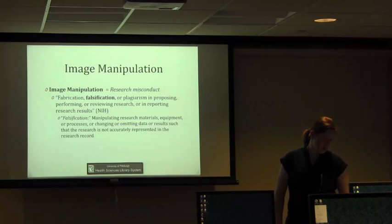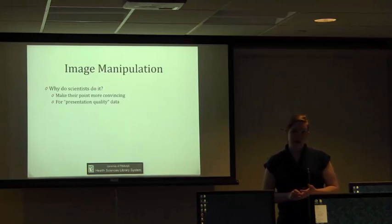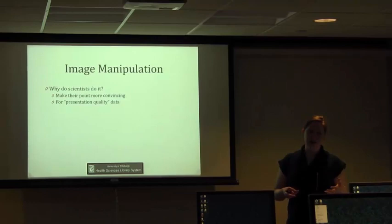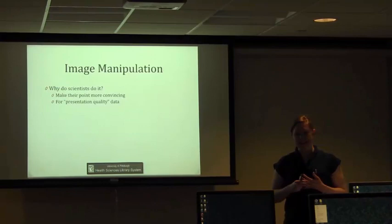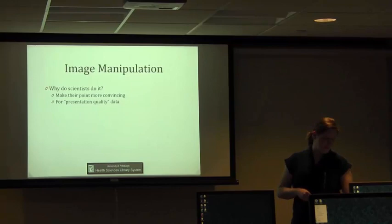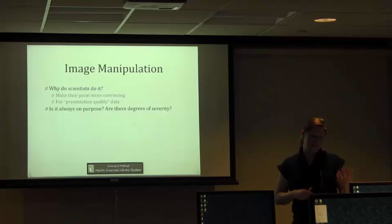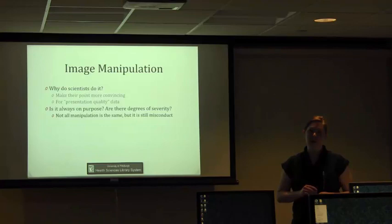Why do scientists manipulate images? Two main reasons are to make their point more convincing. A lot of people say things like, well I knew that was the result but it wasn't quite clear in my data and the scientific assumption of knowing what the results are despite what the data says. I'm sure you all heard that but it's actually not very ethical. Also, people do manipulations for what they call presentation quality data. So the things that they want in the paper.